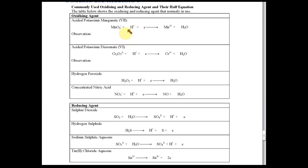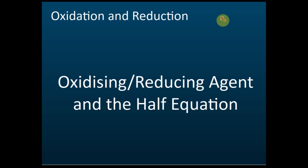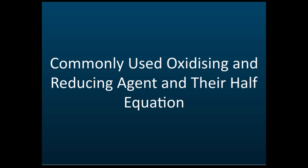If you can remember the half equations, that's very good — try to remember. But if you really can't, you can skip, because usually this will not be asked in the SPM exam. For your school tests or school exams, I'm not sure. So focus on knowing the oxidizing or reducing agents and the half equations.